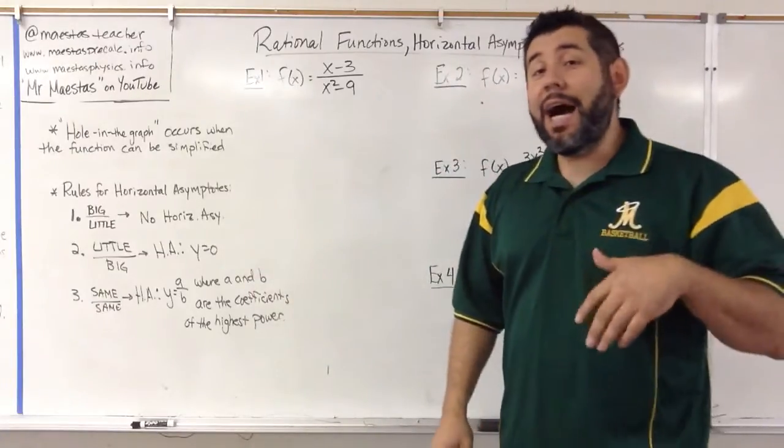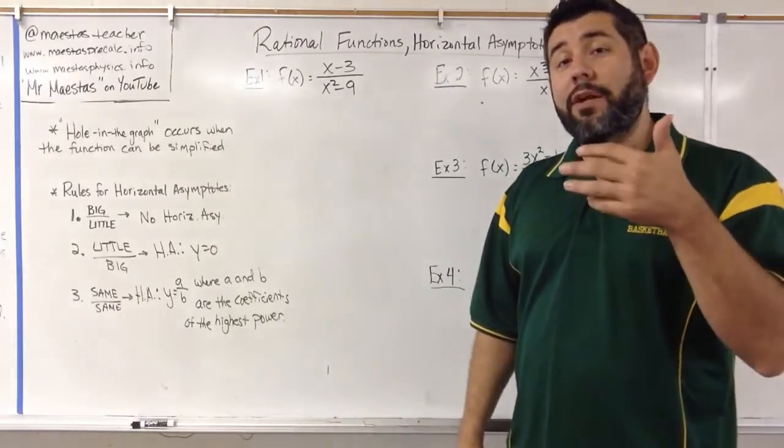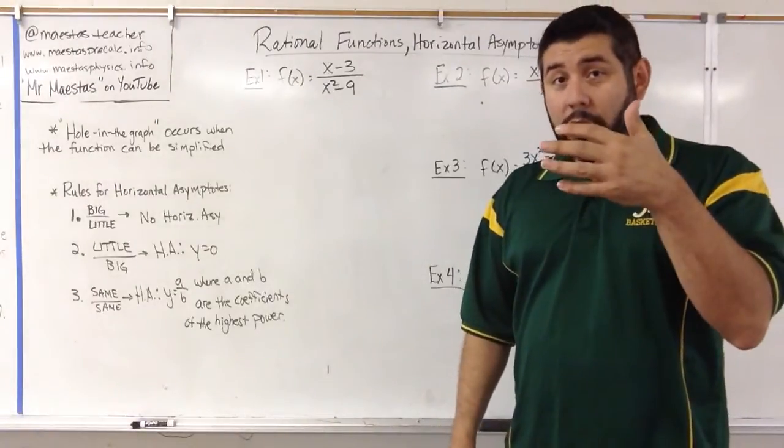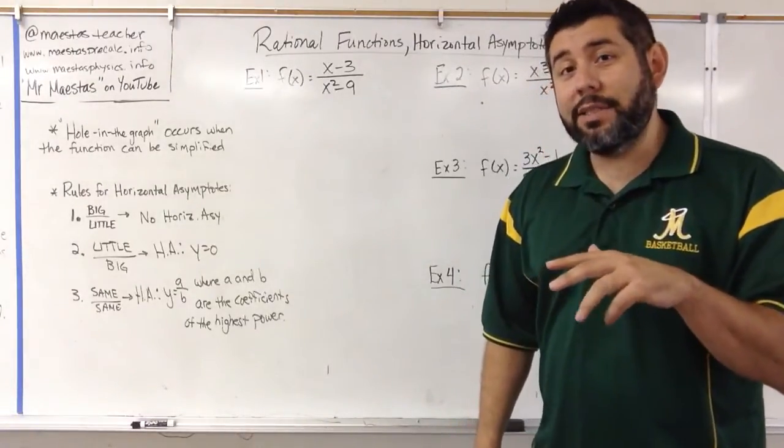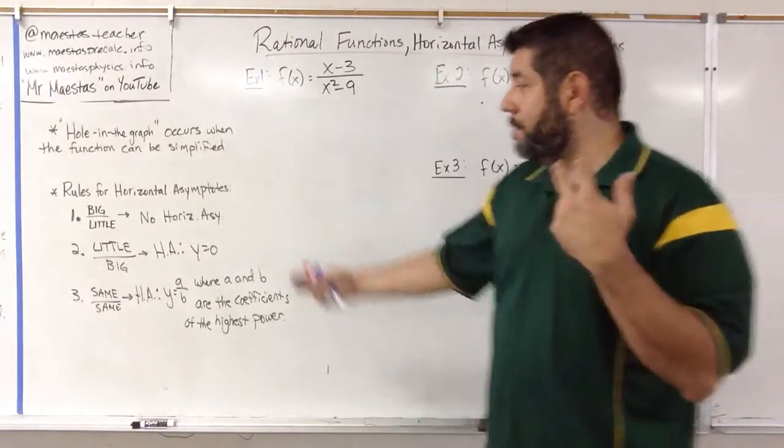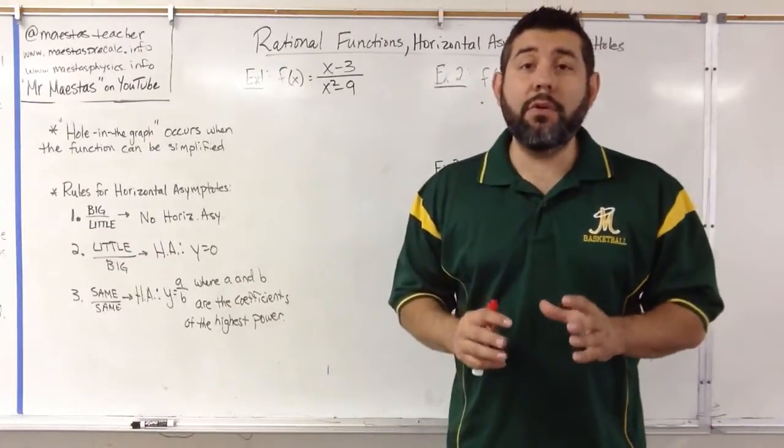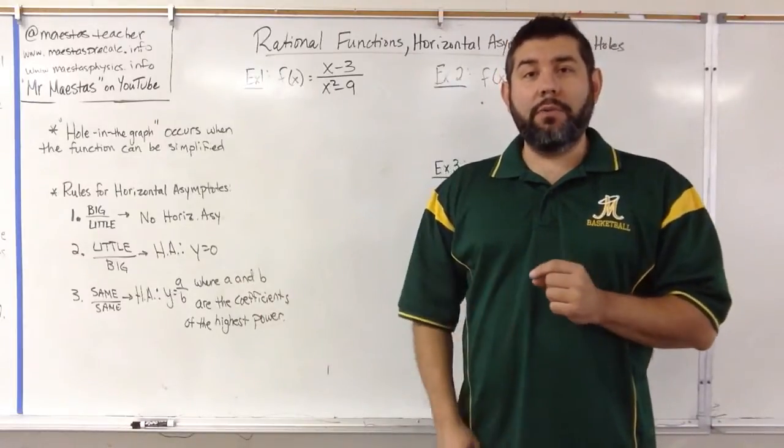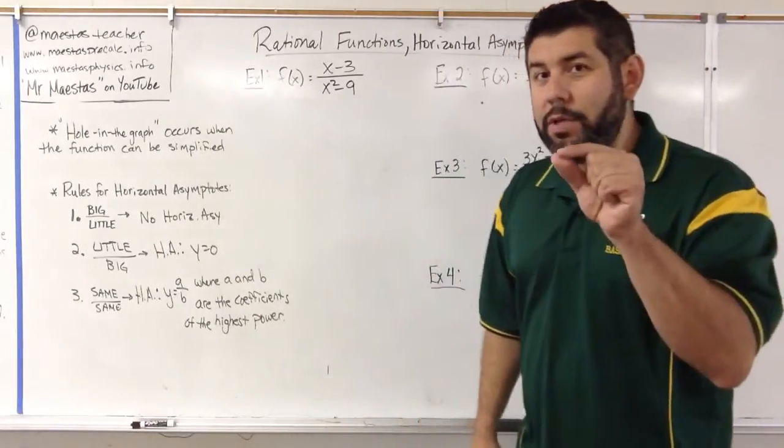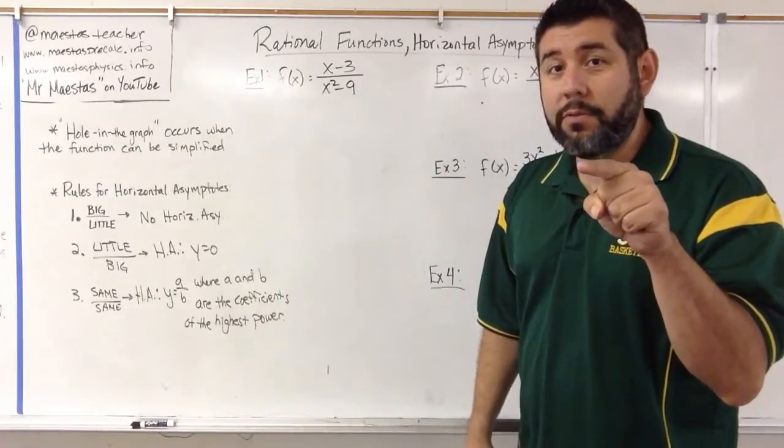However, if the highest power of x in the numerator is smaller than the highest power of x in the denominator, then you have my second rule, which is little over big. In that case, the horizontal asymptote is always going to be y equals zero. Zone in, look for those powers of x.